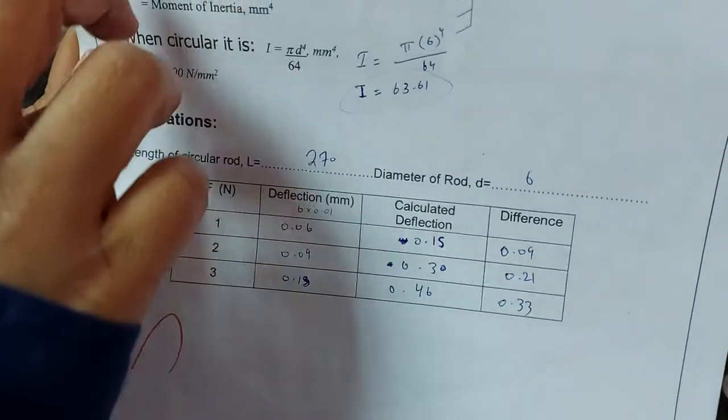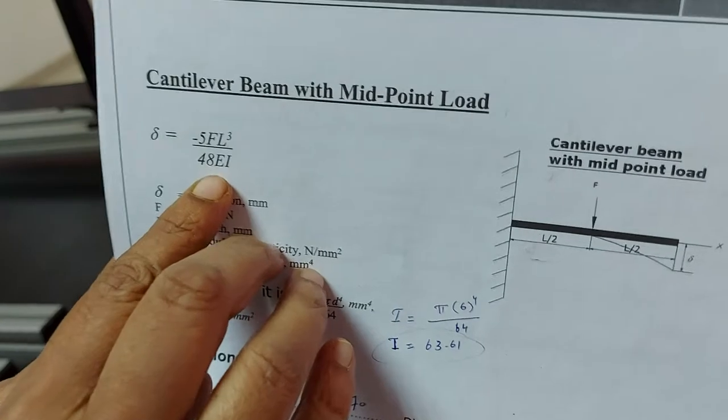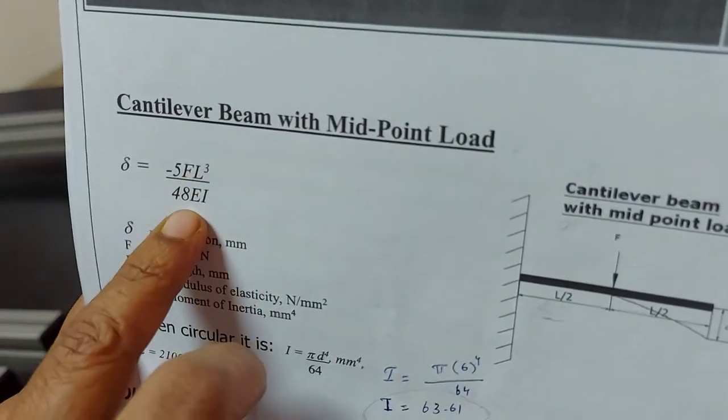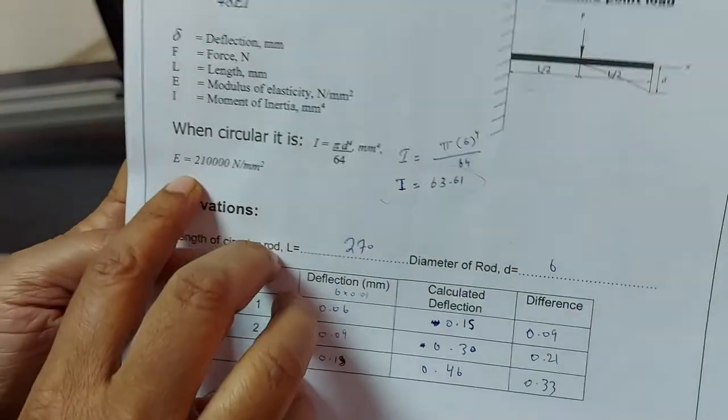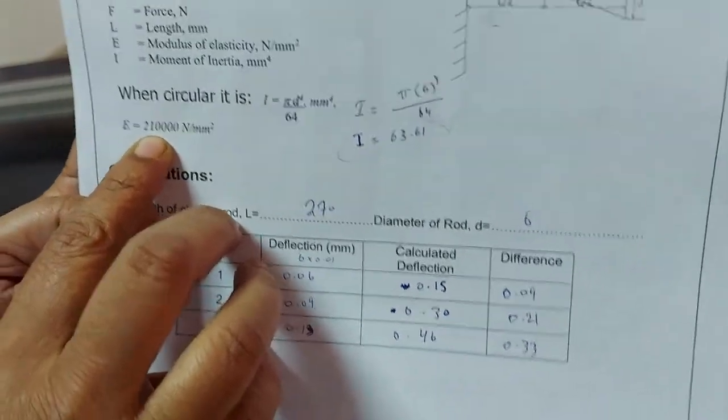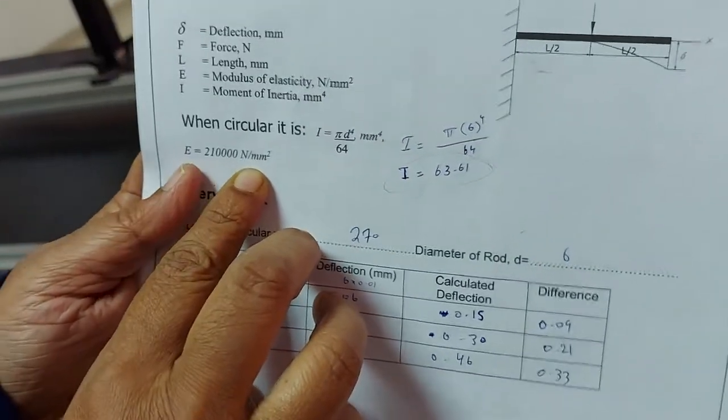And here E is the modulus of rigidity. You have to take the same value because it is the same material, here also it is given 210000 newton per millimeter square.